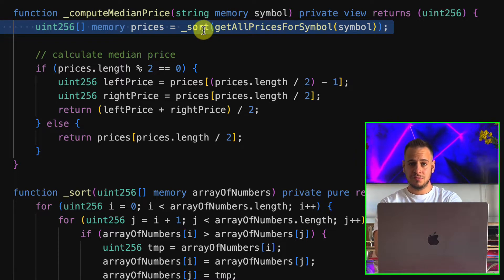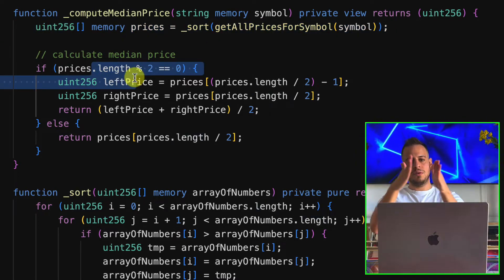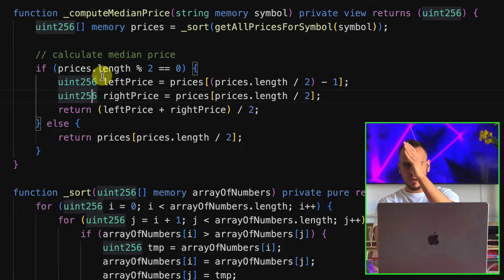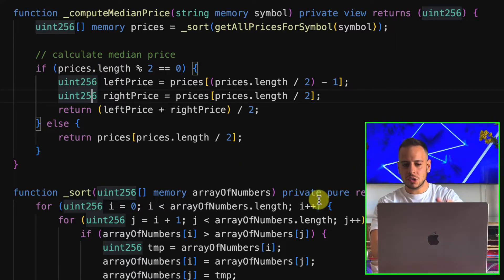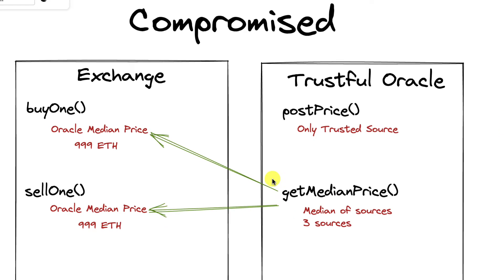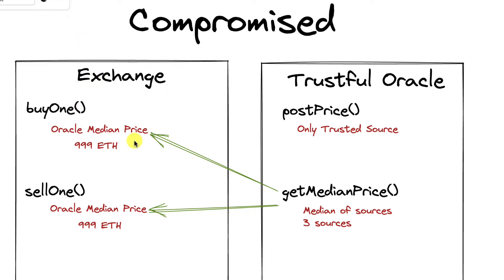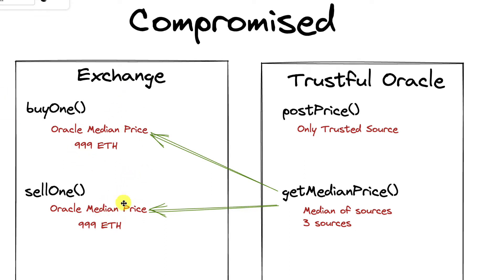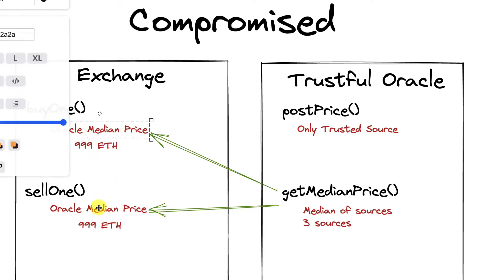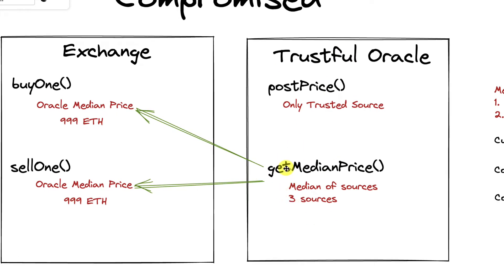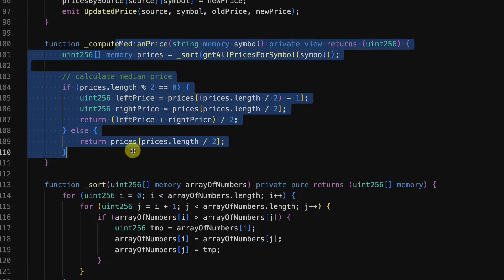computeMedianPrice sorts all the prices from all trusted sources and then picks the middle value. If there are three sources, it takes the middle one. Currently the median price is 999 ETH. Now I've made a diagram summarizing the architecture: the Exchange has buyOne and sellOne, both fetching the median price from the TrustfulOracle, which calculates it from the three trusted sources.